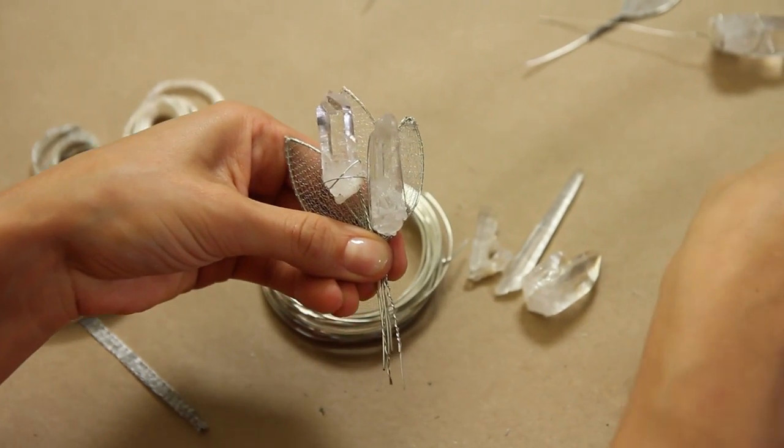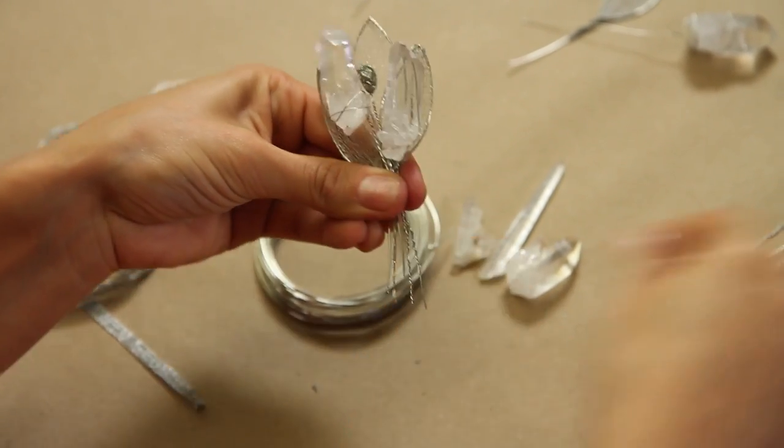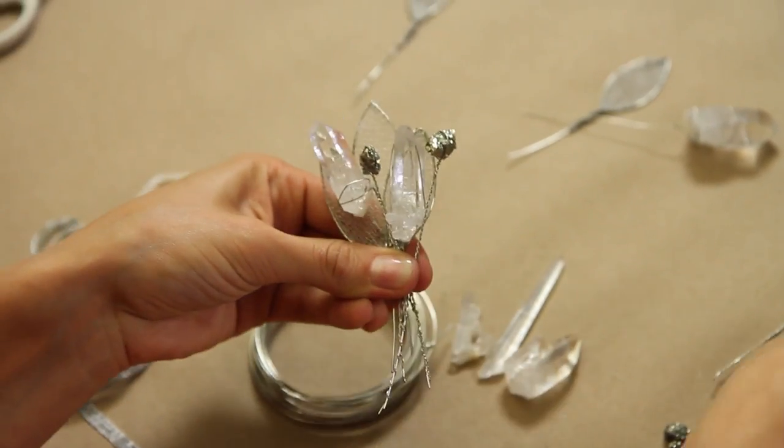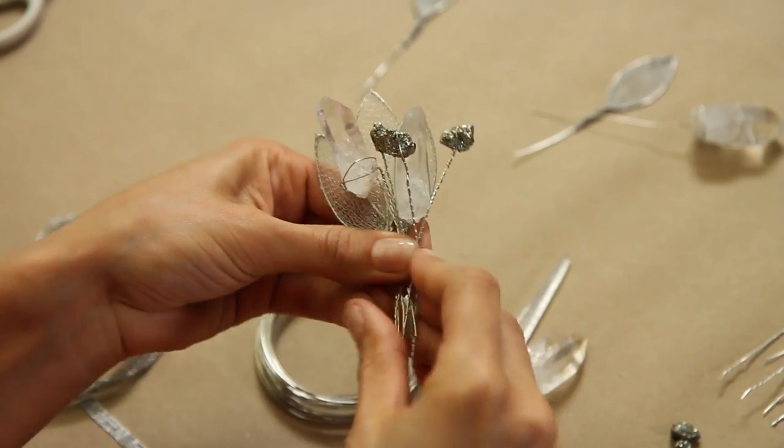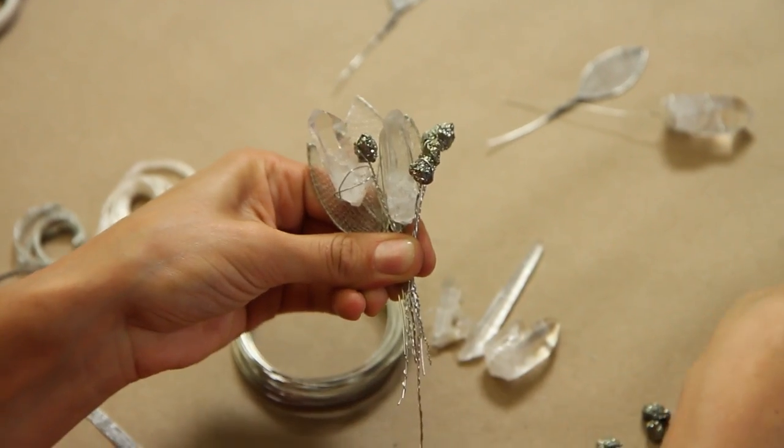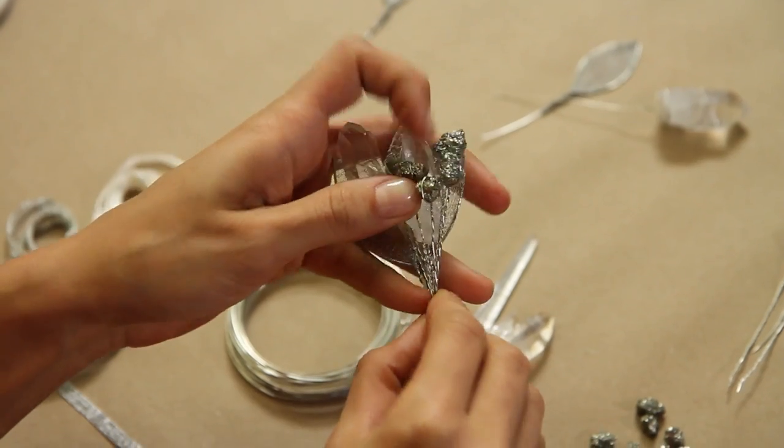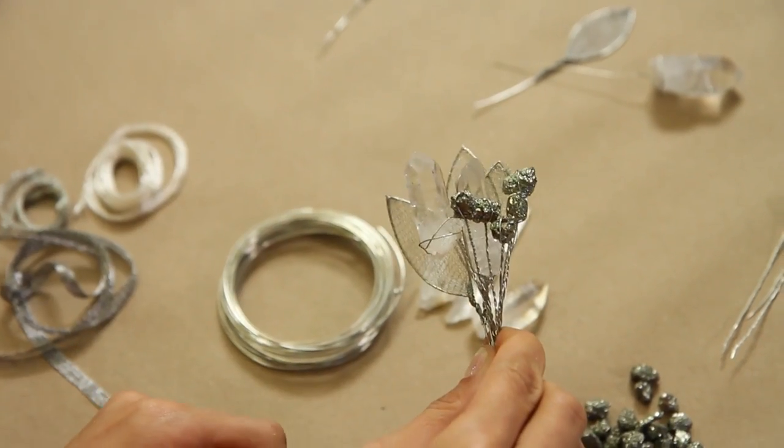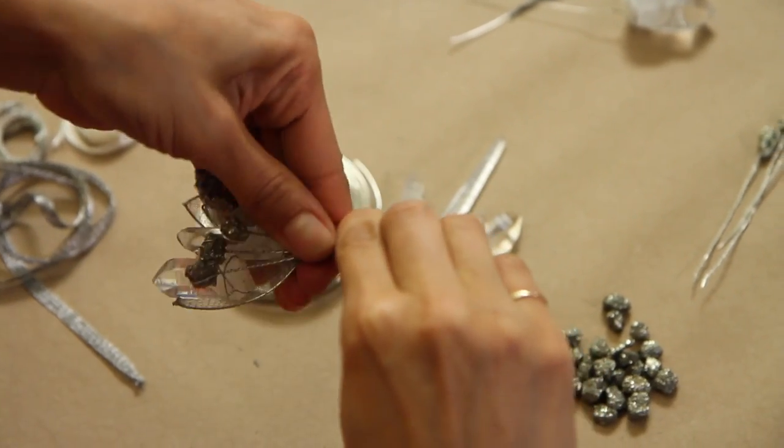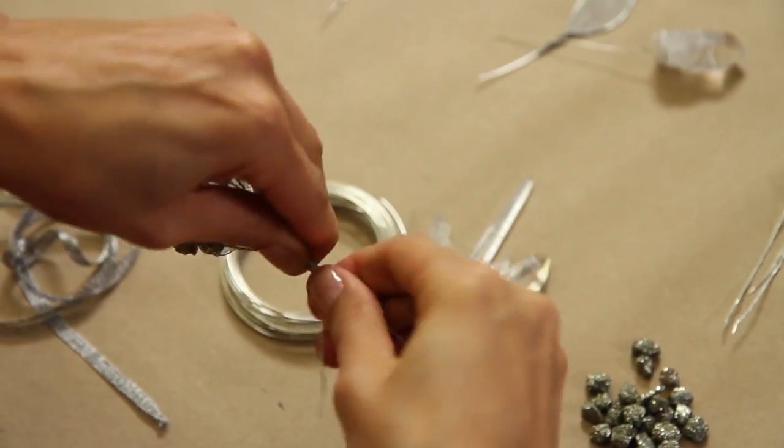Then I'm going to add some pyrite. And same thing, you can kind of stagger it. It doesn't have to be perfect at this point because we are going to adjust it at the end after we wrap it. So I'm going to use about five pieces of pyrite. So there's my bundle. Like we did all the other ones, I'm pinching it at the bottom, and I'm going to twist it.